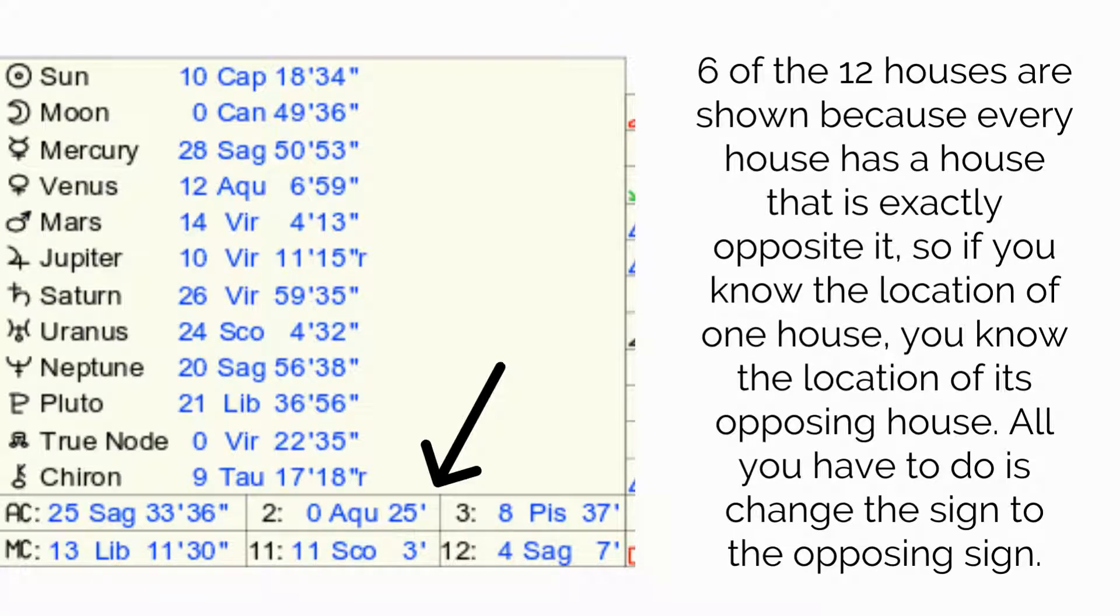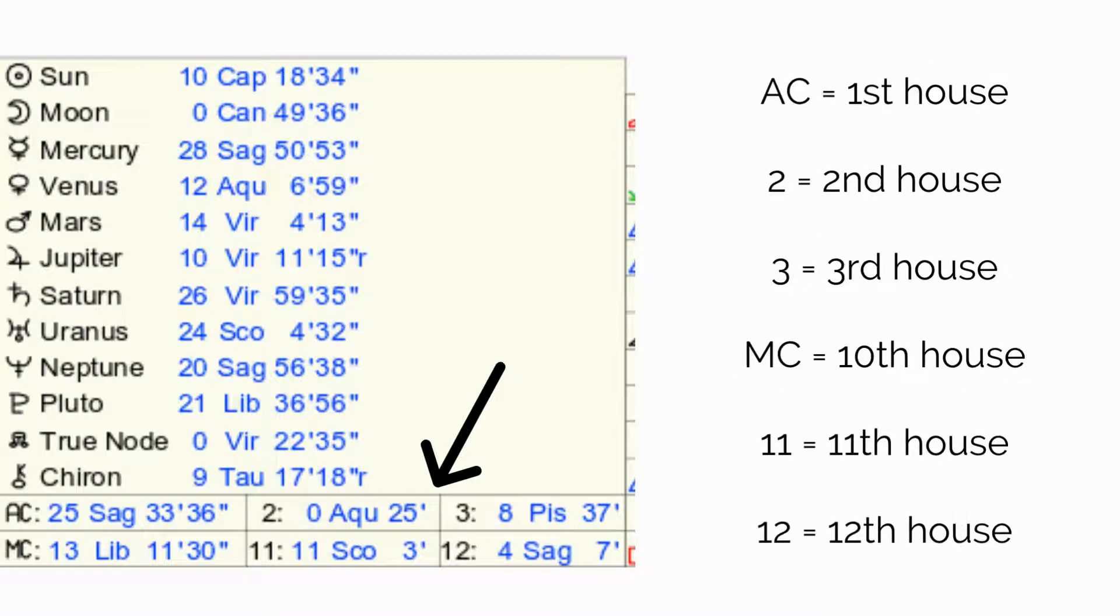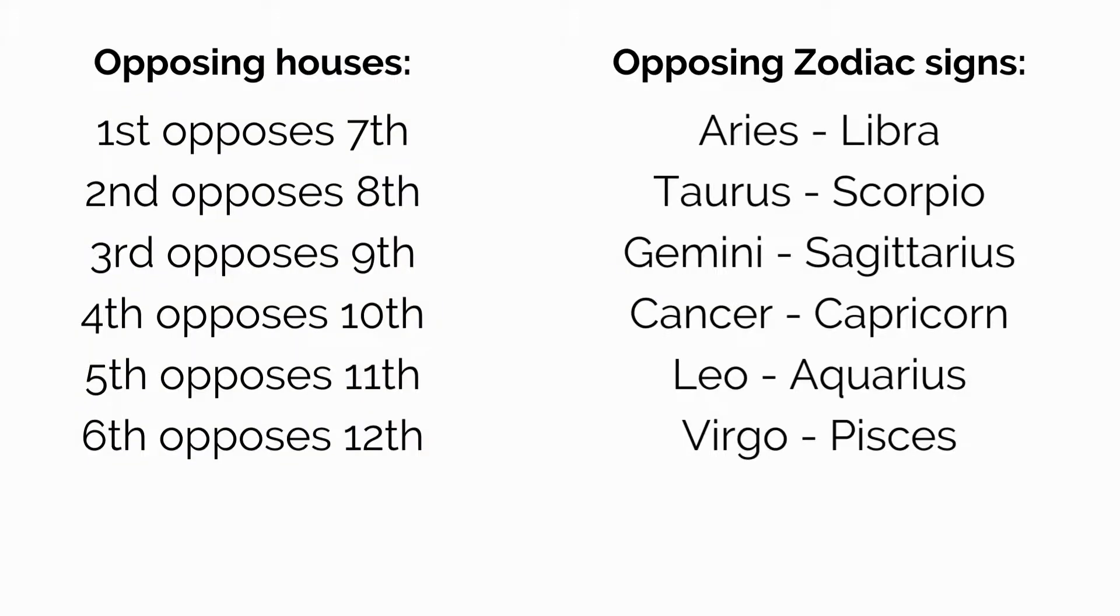Below the planets is the location of six of the 12 house cusps. Only six are shown because every house has a house that is exactly opposite, so if you know the location of one house, you know the location of its opposing house. All you have to do is change the sign to the opposing sign. The six houses shown are the first house, which is the AC; the second house, which is the 2; the third house, which is the 3; the tenth house, which is the MC; the eleventh house, which is the 11; and the twelfth house, which is the 12.